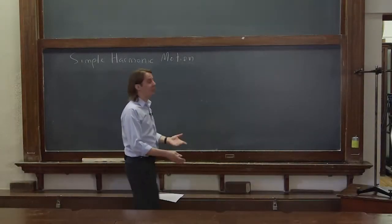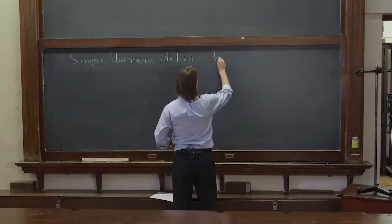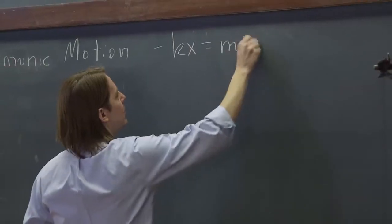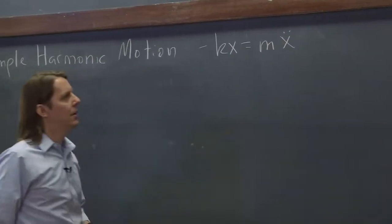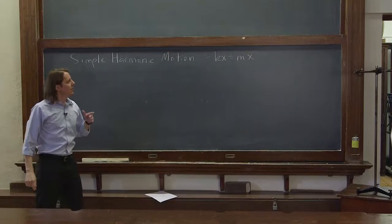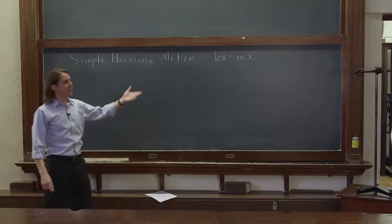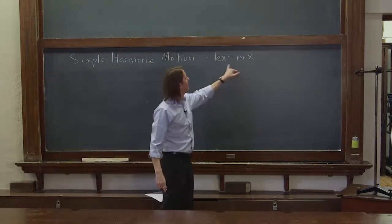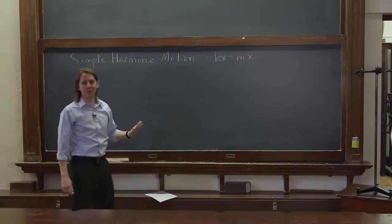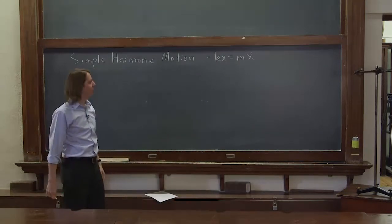So your second differential equation, you can't even solve it. Let's write it again. Minus kx equals m x double dot. We can't solve it because we can't integrate. We can't integrate it with respect to time because we don't know what x is. X is what we're looking for. This is the fundamental problem we have.